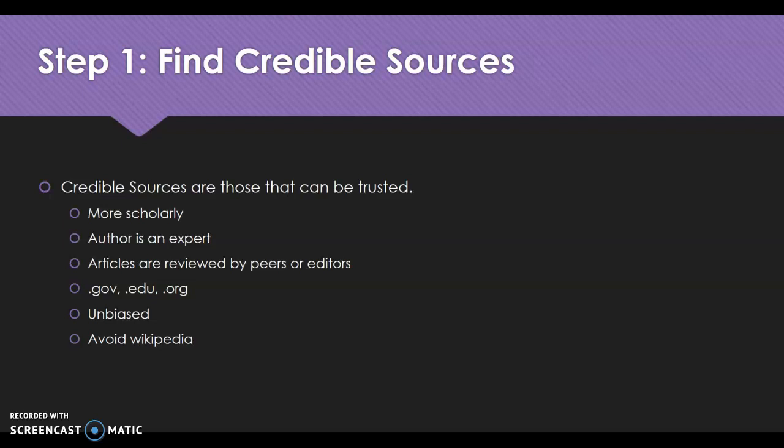Credible sources are those that are appropriate for academic arguments and academic essays. You could write something online and put it out there, but it may not be credible. You might not know a whole lot about a topic — you might have an opinion, but you may not be an expert. So what we're looking for are more credible sources, especially if we're going to be incorporating them into an academic argument.